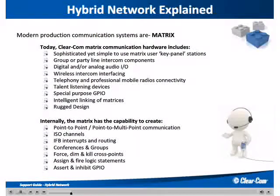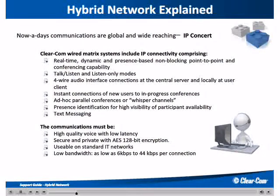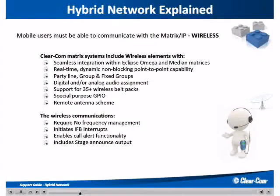The ClearCom Eclipse matrix includes utilization of our user stations called key panels, and the ability to interface to other intercom systems, and a variety of common communication elements that are used in production. Functionally, the Eclipse capabilities support universal standards for communication workflow in all production environments. Our IP connectivity technology incorporates real-time, present-based communications. In short, the IP solution mimics the feel and use of our Eclipse matrix-based technology. The user experiences similar functionality and common workflow activity. The need for intercom user mobility is growing, and the ClearCom wireless building block includes integration within the Eclipse matrices. The wireless capabilities support similar workflow production standards with flexibility and the benefit of no wires.